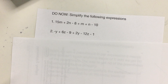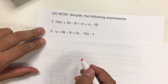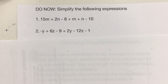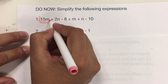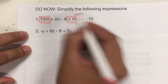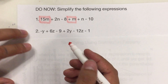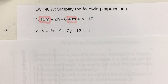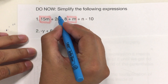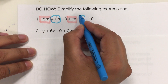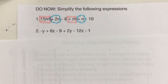In here it says simplify the following expressions. This is from the previous lesson, and so if you recall, what we did was to look for the terms that have the same variable raised to the same power. So in here we have M, another term with M, and we have N, N.